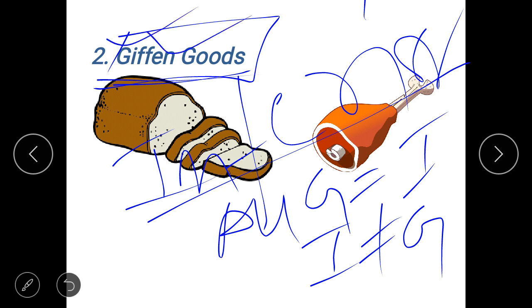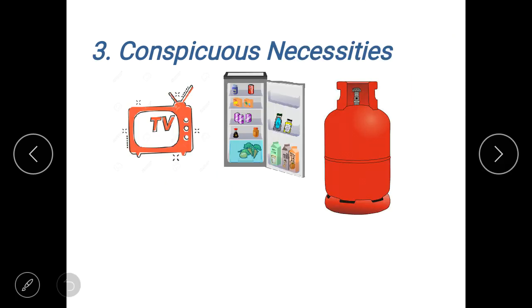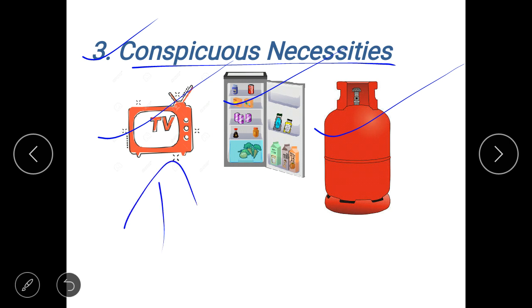Number three, conspicuous necessities. Conspicuous necessities are the necessities of your modern life like your TV, your fridge, your cooking gas. We have used these goods so much in our daily lives that now we cannot imagine our lives without these goods.